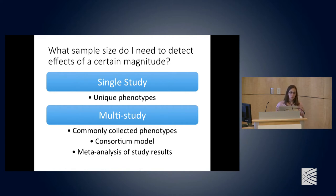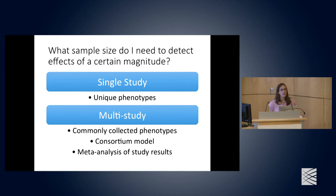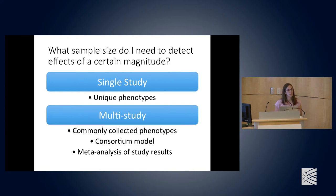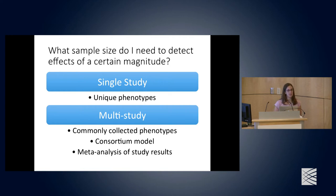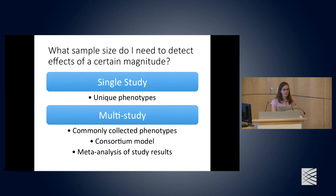There are two approaches to doing GWAS. You can do a single-study GWAS with one data set and a unique phenotype. Alternatively, what has been commonly done over the past 10 years is multi-study GWAS, typical of commonly collected phenotypes like plasma lipids, BMI, or type 2 diabetes, where a consortium of groups contributes results and a meta-analysis is performed, allowing larger sample sizes and greater power.